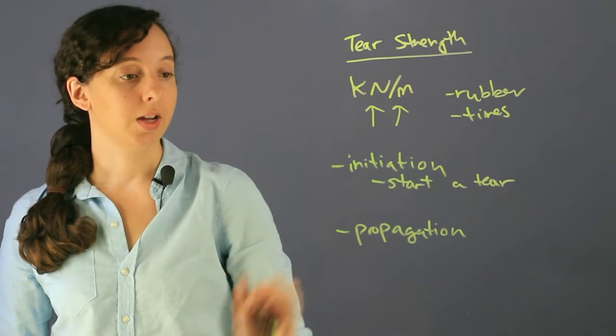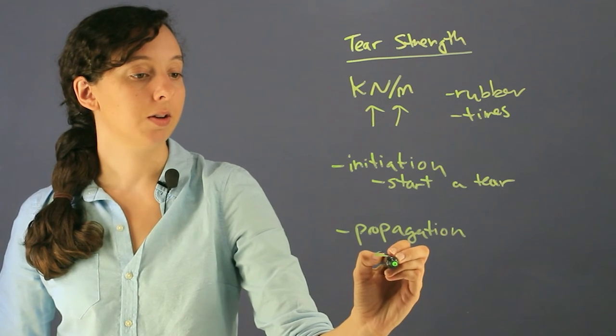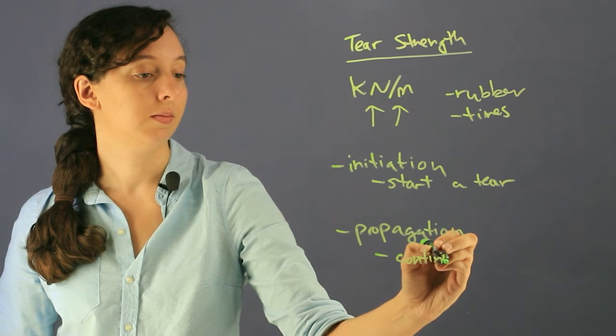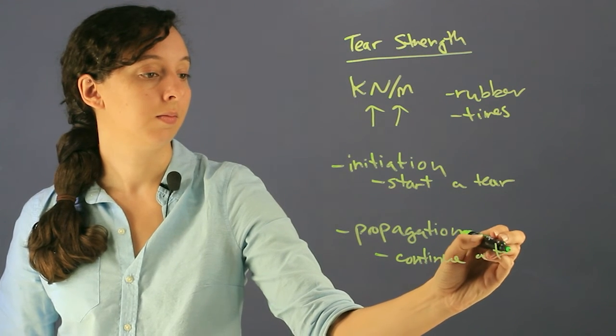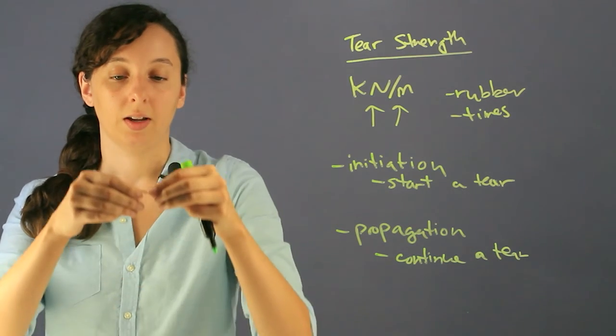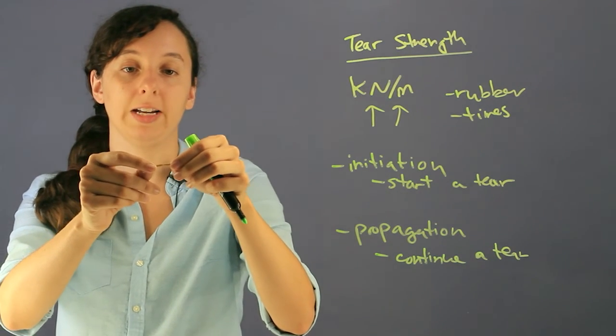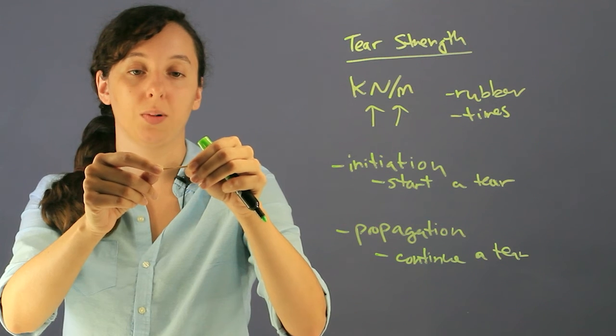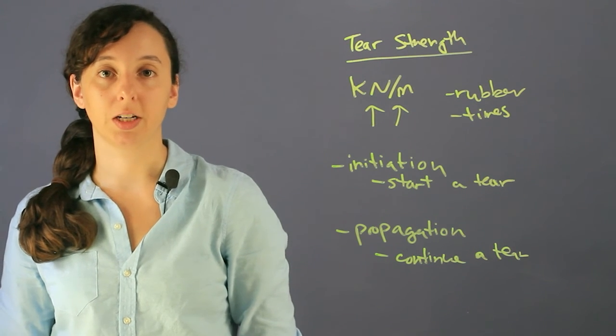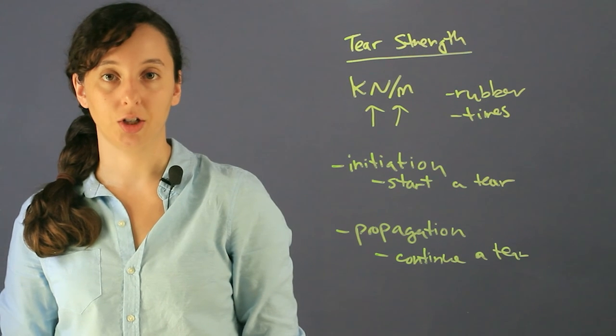The other type is propagation, which is the amount of force you need to continue a tear. If I have a rubber band with a little tear already in it, I'll just have to pull, and you can see the propagation tear strength is going to be a lot smaller than the initiation tear strength.